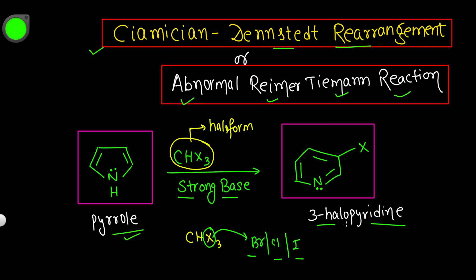My task is to explain the mechanism of this reaction, because without mechanism, organic chemistry is nothing. We need to understand how this five-membered pyrrole ring converts into a six-membered ring — something significant is happening in this reaction.